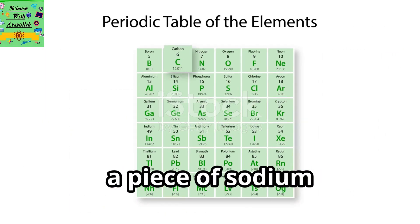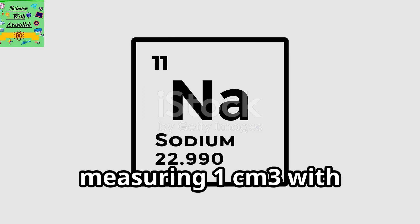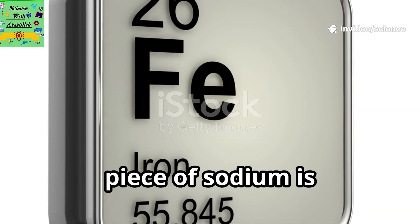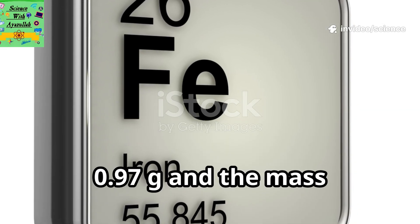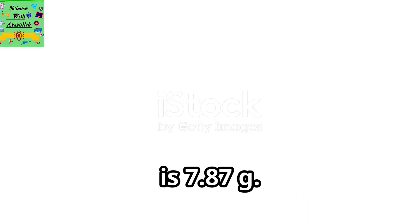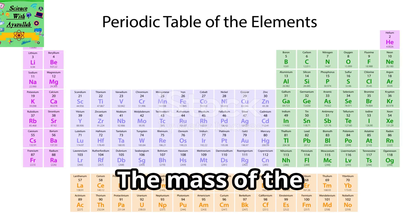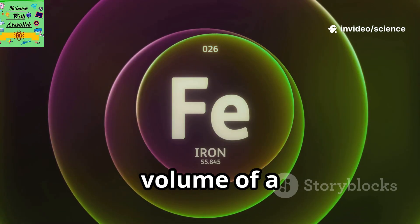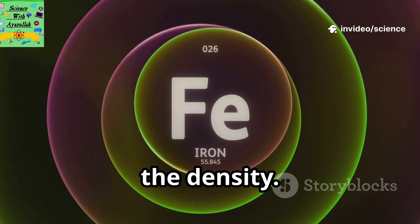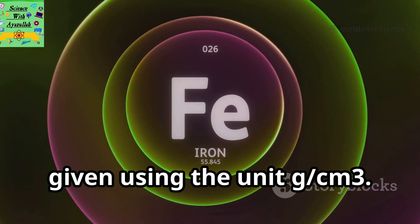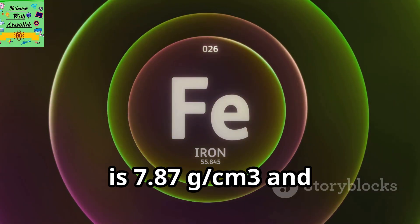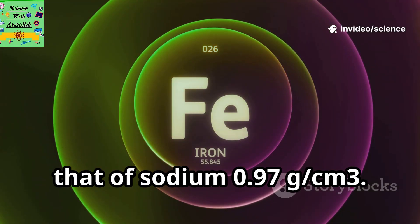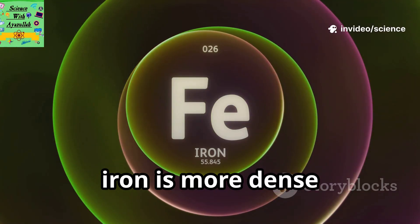Let's compare the mass of a piece of sodium measuring 1 cm³ with the mass of a piece of iron measuring 1 cm³. The mass of the piece of sodium is 0.97 grams, and the mass of the piece of iron is 7.87 grams. The mass of the iron is more than that of the sodium. This measure of mass for a fixed volume of a substance is called the density, given using the unit g/cm³. The density of iron is 7.87 g/cm³ and that of sodium is 0.97 g/cm³, so iron is more dense than sodium.